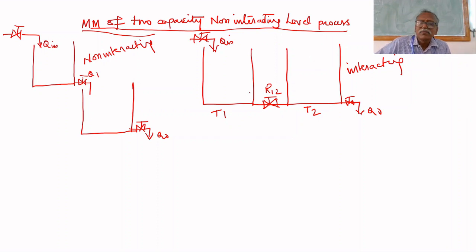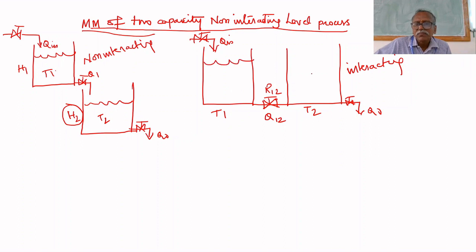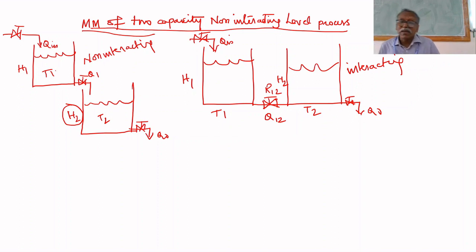The second one is called interacting because let us assume that the level in the first tank is H1 and the level in the second tank is H2. The flow rate from the first tank to the second tank — this is tank 1, this is tank 2 — will not be affected by the level in the second tank; that is non-interacting. Here, the flow rate Q1 from the first tank to the second tank is affected by the level H2 in the second tank.